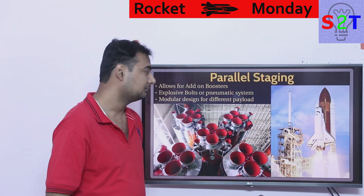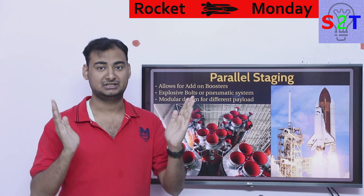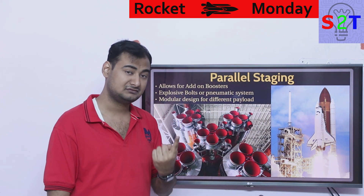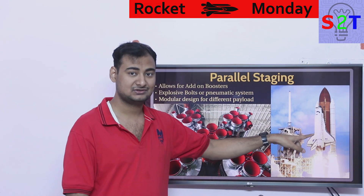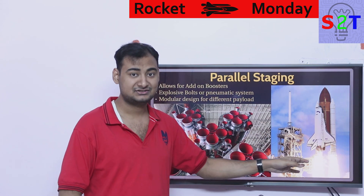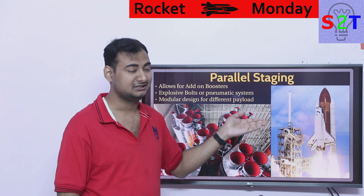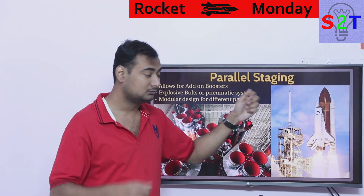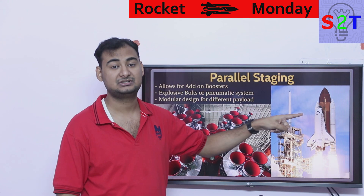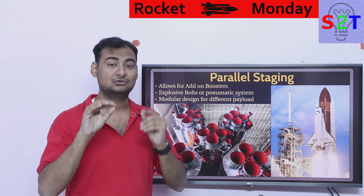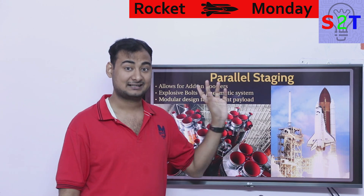What about parallel staging? It allows you to have boosters — multiple engines firing at the same time rather than one after another. The Space Shuttle is a unique case: the main engines started at sea level and reached orbital velocity in one continuous burn — they never shut off. However, while those engines had the speed capability, they didn't have enough sea-level thrust alone, so solid rocket boosters were added alongside. Once the boosters delivered enough energy, they fell away and the orbiter continued to orbit.